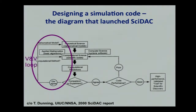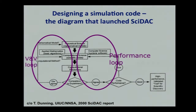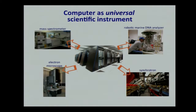This is the diagram that launched the SciDAC initiative back in 2000 by Tom Dunning, the retiring director of the NCSA. Above this flow chart we could really put two loops: the validation and verification loop, primarily the work of scientists and mathematicians to perfect the representation of physical nature in the digital world; and the performance loop, executed by mathematicians and computer scientists to turn the computer into a bona fide scientific instrument with predictive power. The computer is indeed a universal scientific instrument, used by people across all disciplines — mass specs, electron microscopes, DNA sequencers, and the supercomputer, which is a facility that boosts all boats.